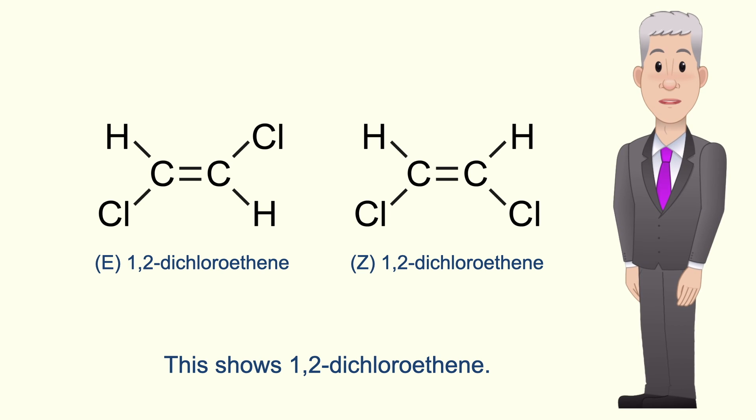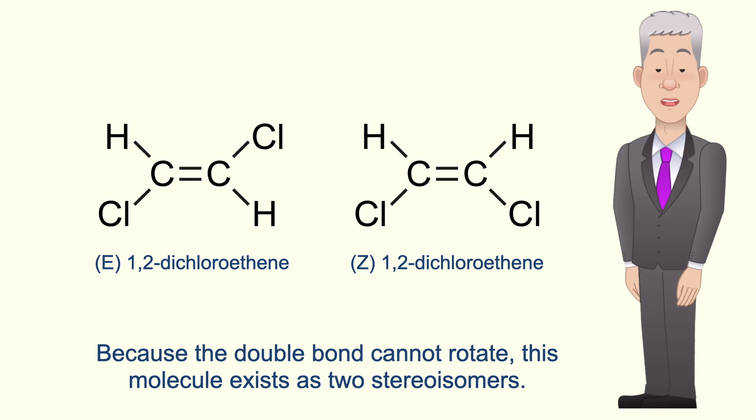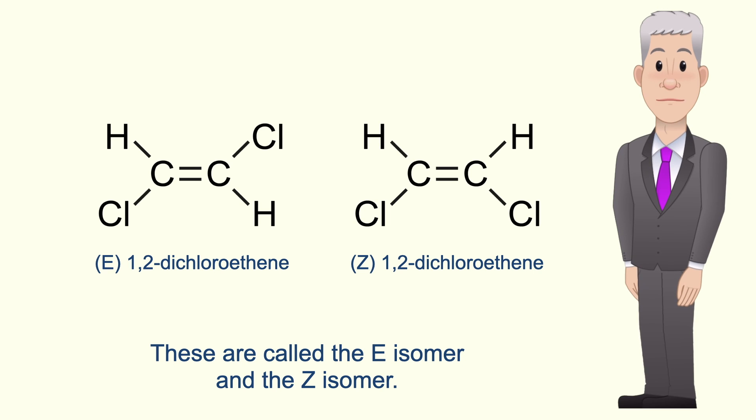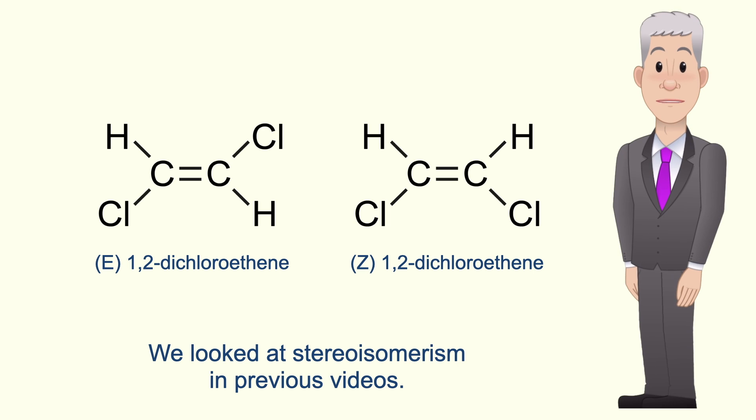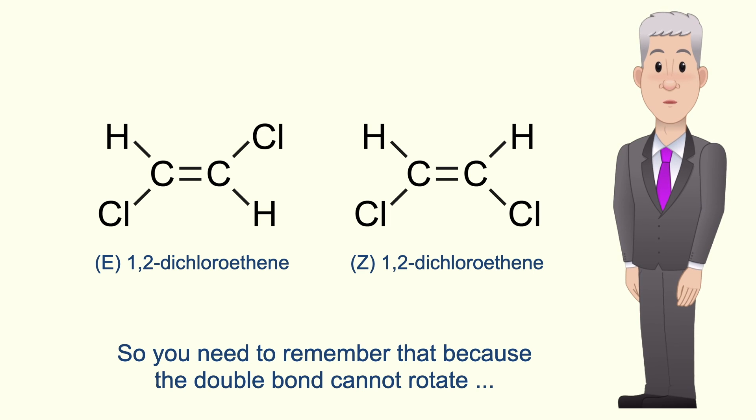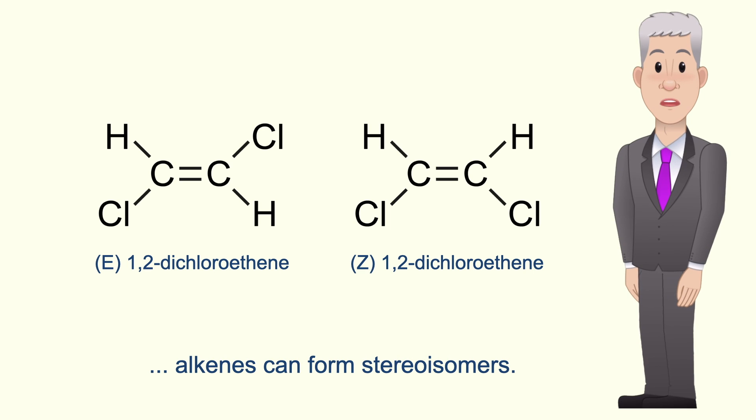This shows one two dichloroethene. Now because the double bond cannot rotate this molecule exists as two stereoisomers. These are called the e-isomer and the z-isomer and we looked at stereoisomerism in previous videos. So you need to remember that because a double bond cannot rotate alkenes can form stereoisomers.